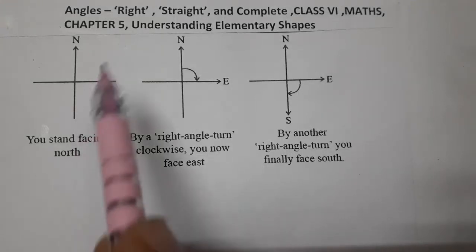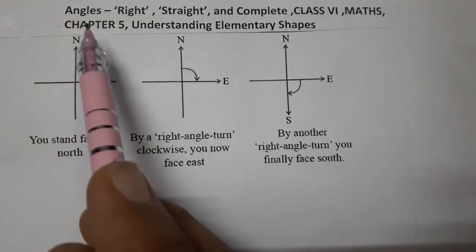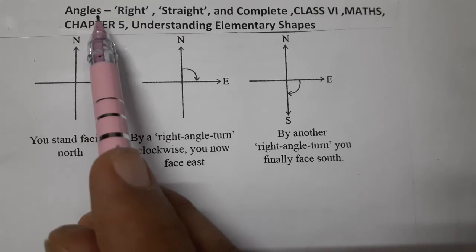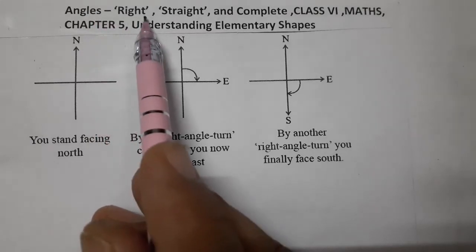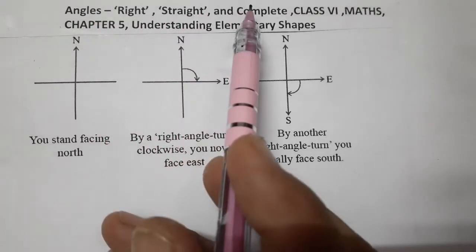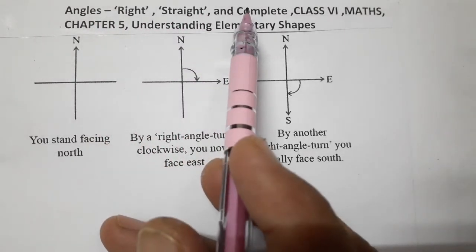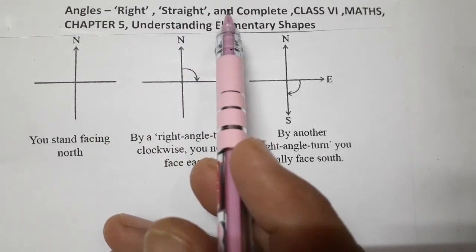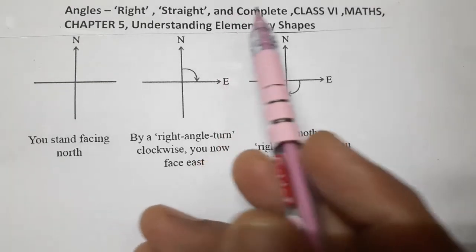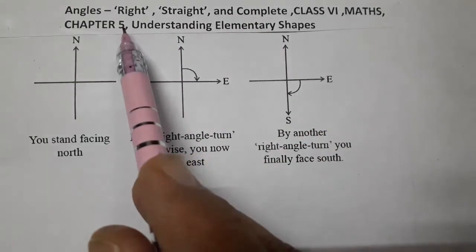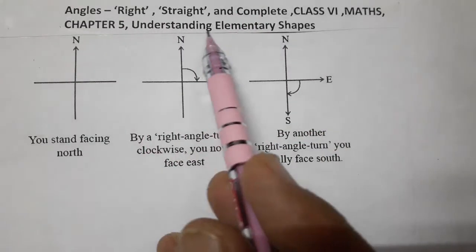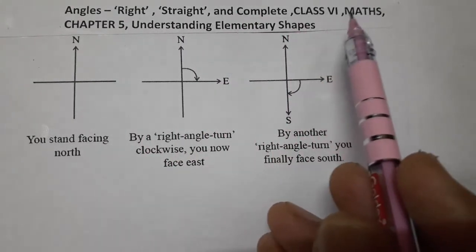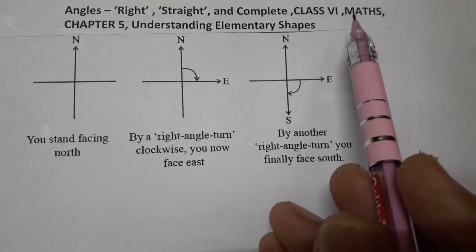Hello students, today we are going to learn about angles — right, straight and complete angles in terms of directions. Chapter 5, Understanding Elementary Shapes, Class 6 Mathematics.